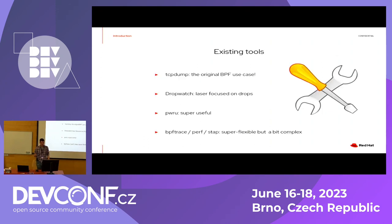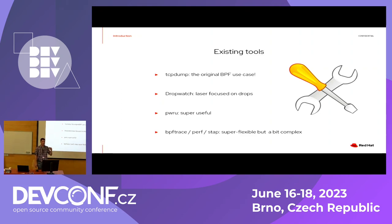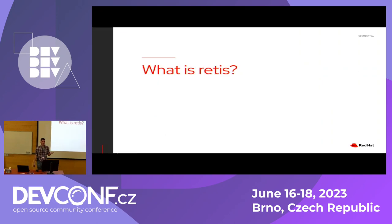Looking at existing tools: we have the venerable tcpdump — we all love the PCAP filtering, you can express any filter and it just works, and it is of course the seed of eBPF, so our respects. We have dropwatch, which is focused on drops and gives you the stack trace of each drop. We have PWRU, which probes many different places and is awesome. And we also have tools like BPF trace, perf, and SystemTap, which are complicated but very powerful.